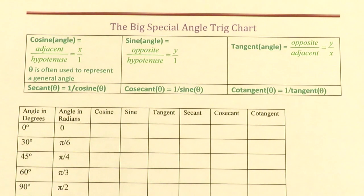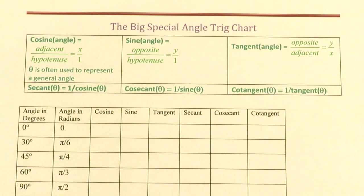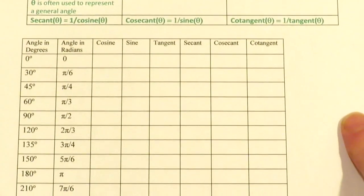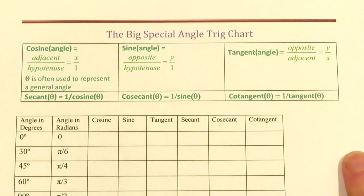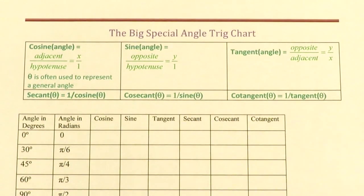You're going to want to be able to fill this chart in pretty quickly as you move on through trig and then go into classes where you use a lot of trig, like physics and calculus. At first it seems like you've got to memorize all of these points, but just like when we were going over the unit circle, it's not about memorizing — it's about recognizing patterns and remembering your definitions. Remember: cosine is x, sine is y, and tangent is the ratio of y to x.